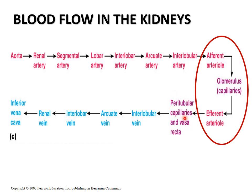For juxtamedullary nephrons, the blood supply is by the vasa recta. Peritubular capillaries supply the cortical nephrons in the cortical region, while vasa recta supply the juxtamedullary nephrons in the inner part. Blood then drains through the interlobular vein, arcuate vein, interlobar vein, and renal vein, joining back into the inferior vena cava.